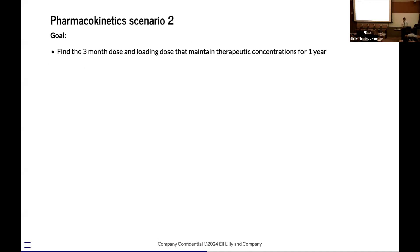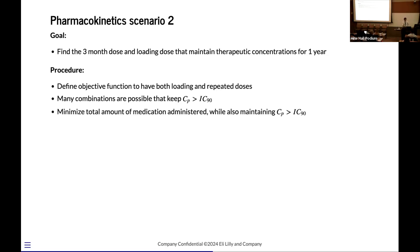One way that we could counteract this is by introducing a loading dose. So let's phrase the problem instead as finding the three-month dose and a loading dose that maintains the therapeutic concentrations that we're looking for for one year. And so again, we could iteratively go through and try different loading dose and repeated dose combinations, but now that we have this combination of two, that's going to be particularly painful to do, particularly when repeated. So same procedure as before, we define an objective function that is in terms of both the repeated dose and the loading dose. In this case, you might point out that there are actually many combinations of loading doses and repeated doses that are going to sustain target concentrations. And so this isn't actually a well-determined system because there are multiple solutions.